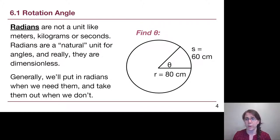Here's an example. If we have a circle of radius 80 centimeters, and we're looking at an arc length S of 60 centimeters, with those two numbers in mind, what would the angle theta be that describes the portion of the circle that we're looking at?